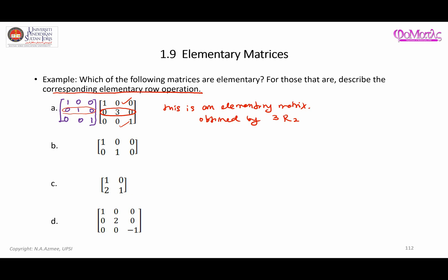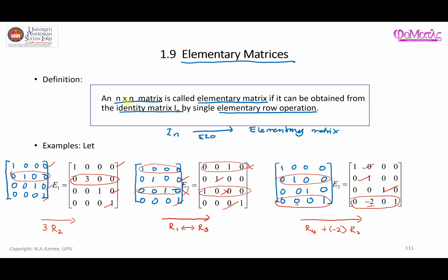For question B, this is not an elementary matrix because it is not a square matrix. Going back to the definition, an elementary matrix must be a square n×n matrix, so this one does not qualify.